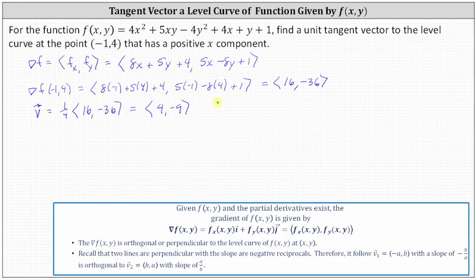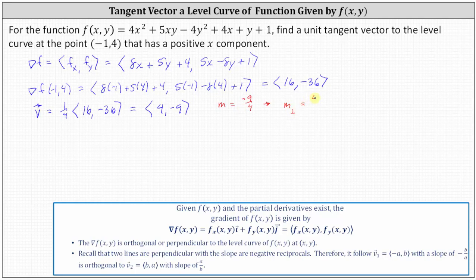The slope of this vector is the y component divided by the x component, which is negative 9 fourths. A vector that is perpendicular to this vector would have a slope that is the negative reciprocal, which is 4 ninths. This indicates the tangent vector must have a slope of 4 ninths if the normal vector has a slope of negative 9 fourths.